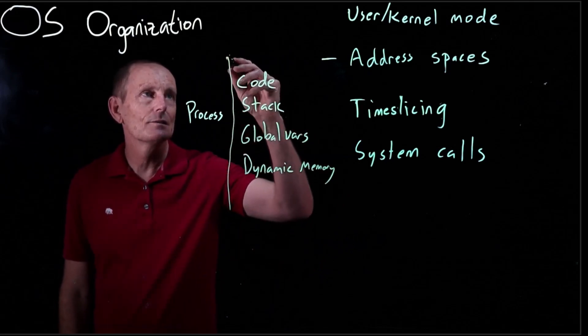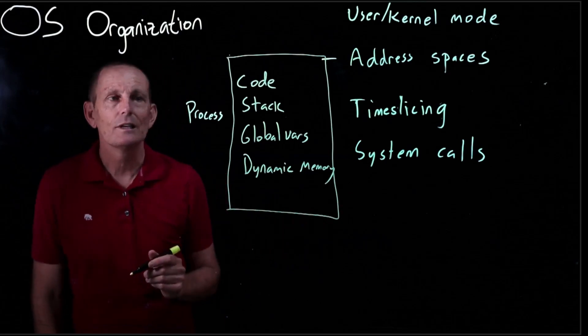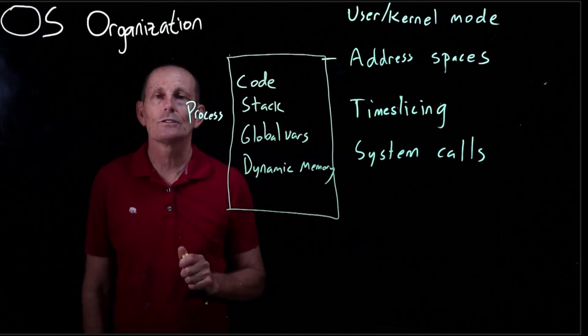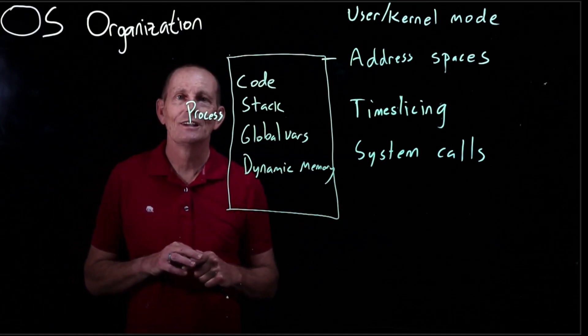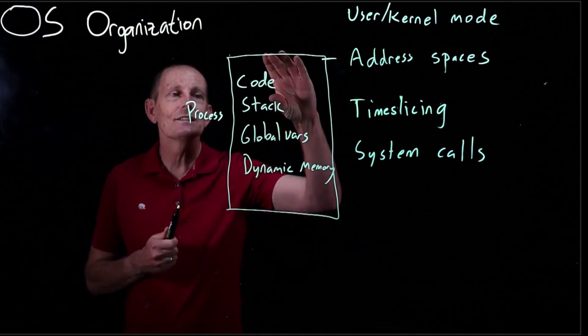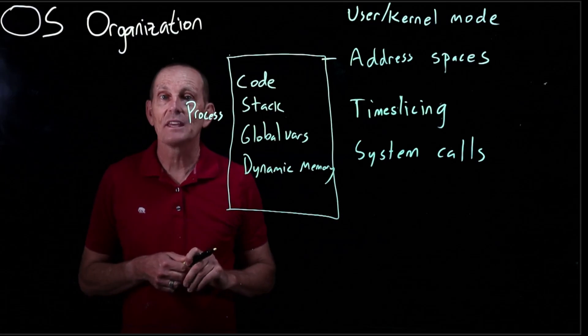All that is what the process needs to have access to. And really, when I say the process needs to have access to, what I mean is the processor, as it is executing on behalf of this process, needs to have access to all of this in memory. But nothing else.